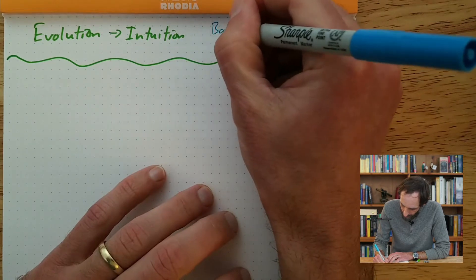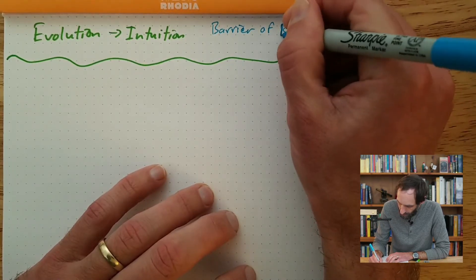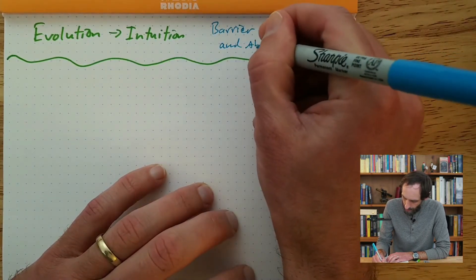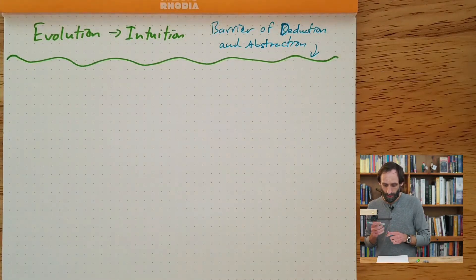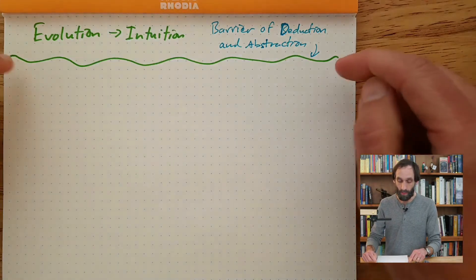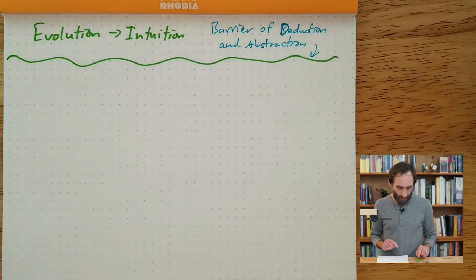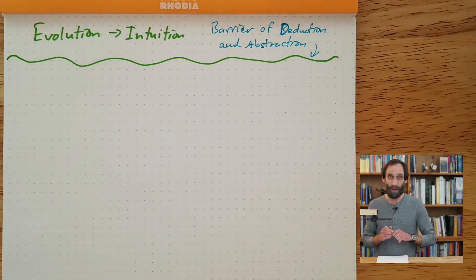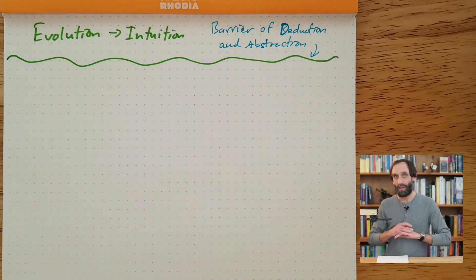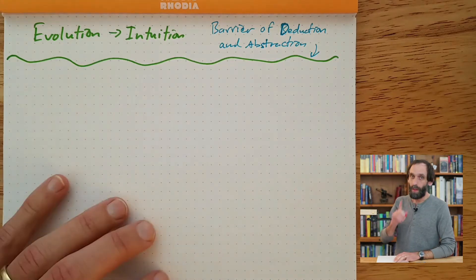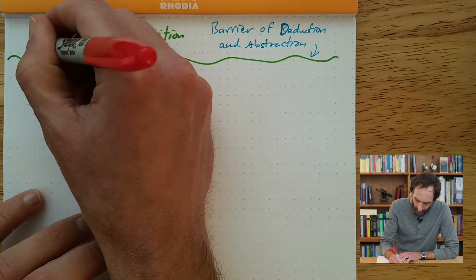So in order to start doing mathematics, we need to break through this barrier. We need to go beyond our intuition and embrace the tools of deduction and abstraction. Where and when did this happen? It's impossible to say exactly — it happened in many places by many different people at different times. But one place where we see this breaking of the barrier of deduction and abstraction is in the area of counting.